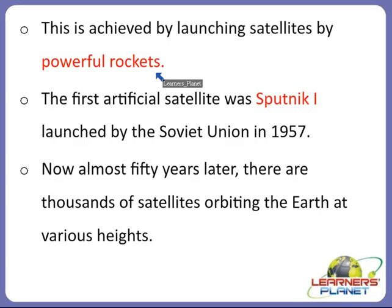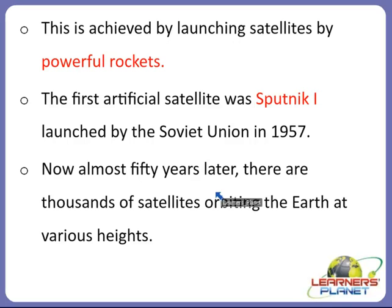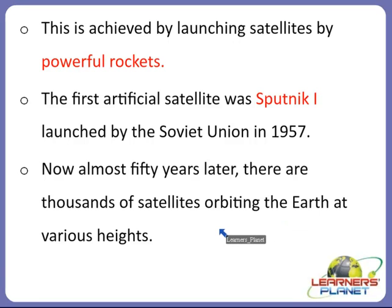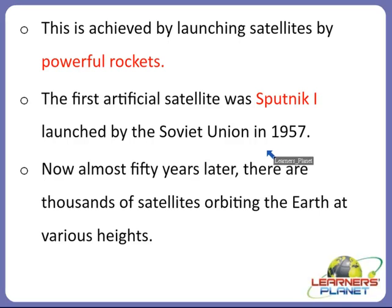The first artificial satellite — the man-made object to orbit the earth — was Sputnik 1, launched by the Soviet Union in 1957. Now, almost 50 years later, there are thousands of satellites orbiting the earth at various heights. The Soviet Union also launched a probe called Luna 1, which was supposed to crash into the surface of the moon, and after that they launched many other probes and artificial satellites.